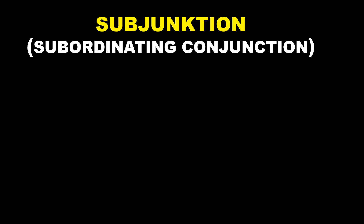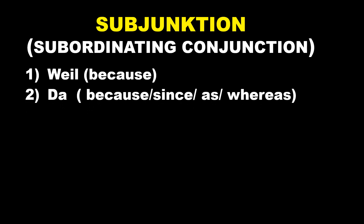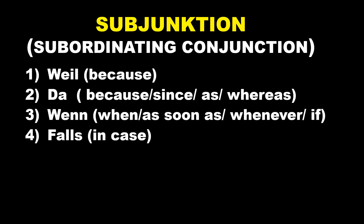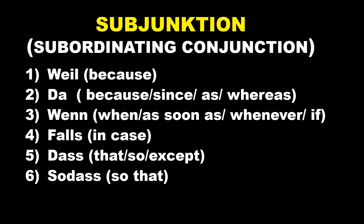Now, here we are taking six Subjunktionen: weil, da, wenn, falls, dass, and sodass. Weil means 'because'; da means 'because,' 'since,' 'as,' or 'whereas' — there are different meanings in different contexts. Wenn means 'when,' 'as soon as,' 'whenever,' or 'if,' again depending on context. Falls means 'in case'; dass means 'that,' 'so,' or 'except'; and sodass means 'so that.' There are many more Subjunktionen, but we are going to take only these six here, and in my next video you will find further ones. Let's first try to understand these common words and how to use them.